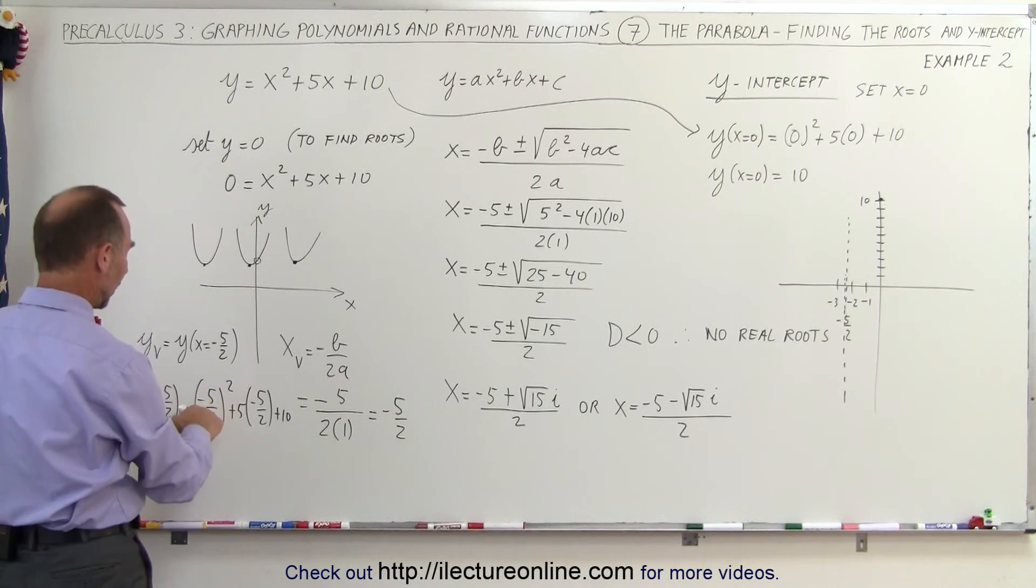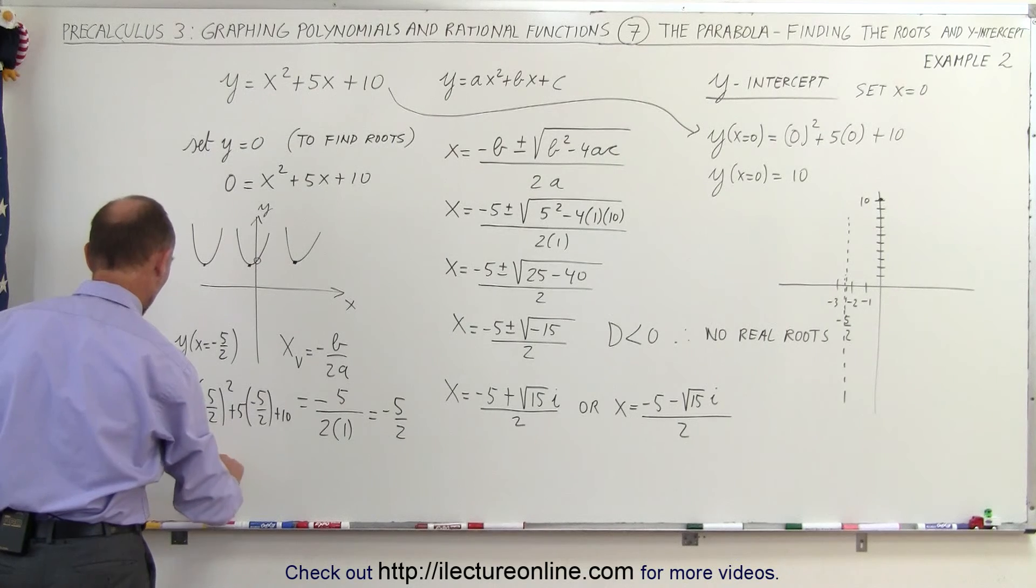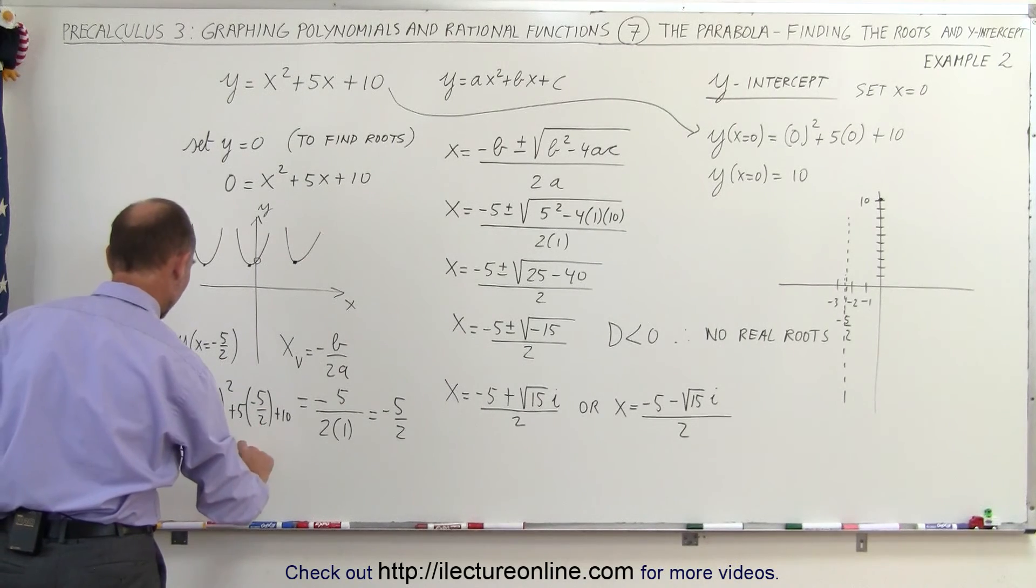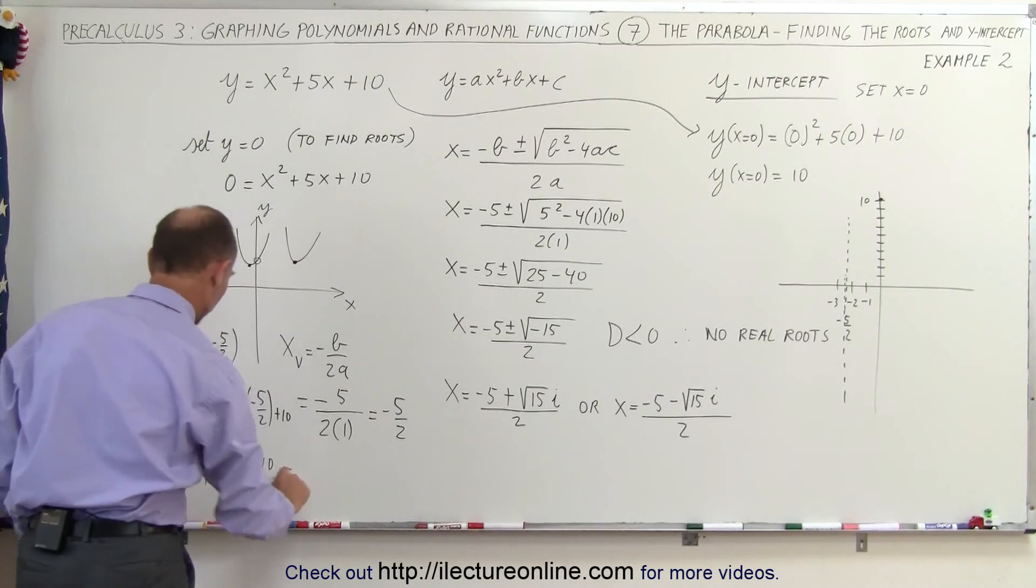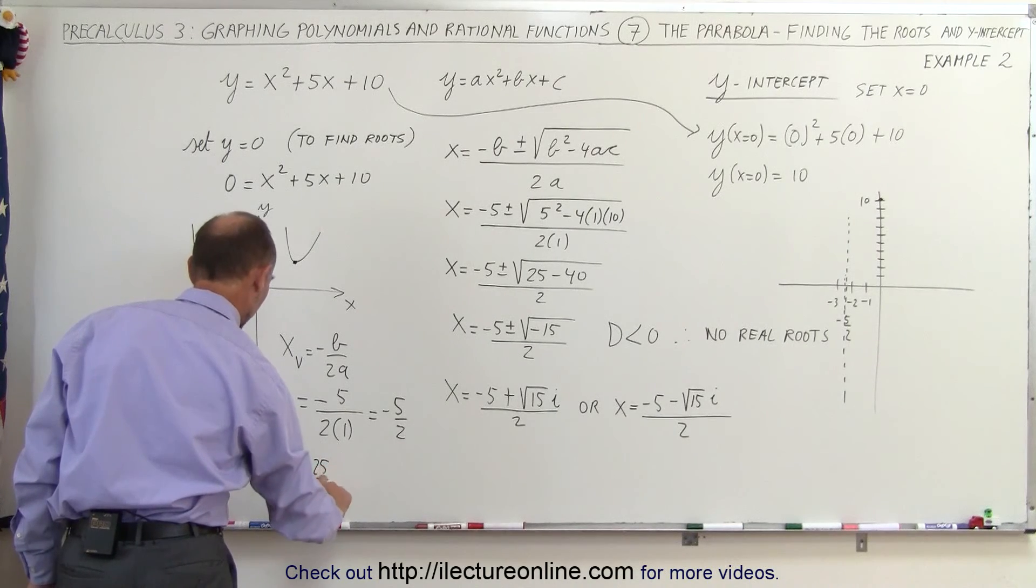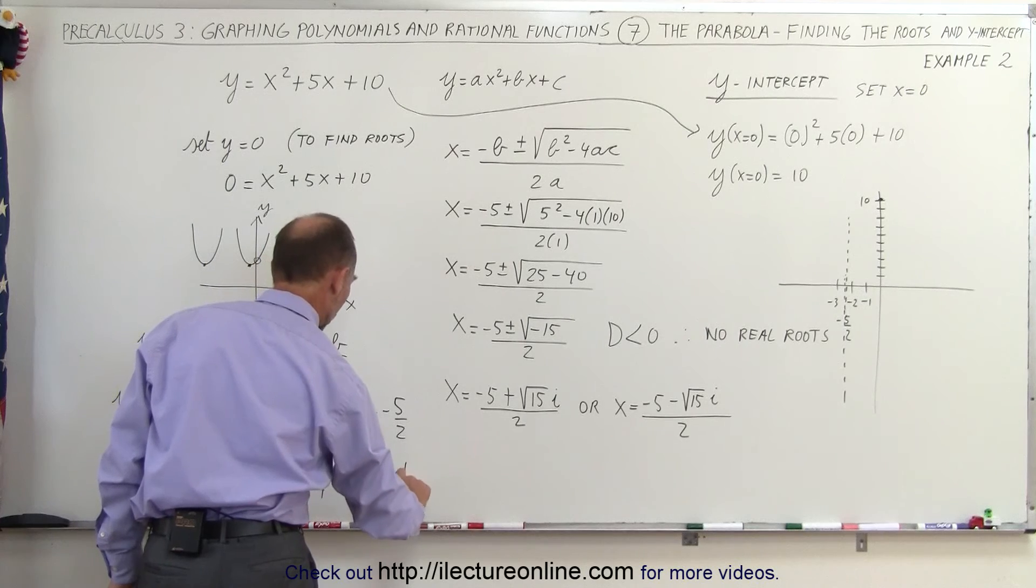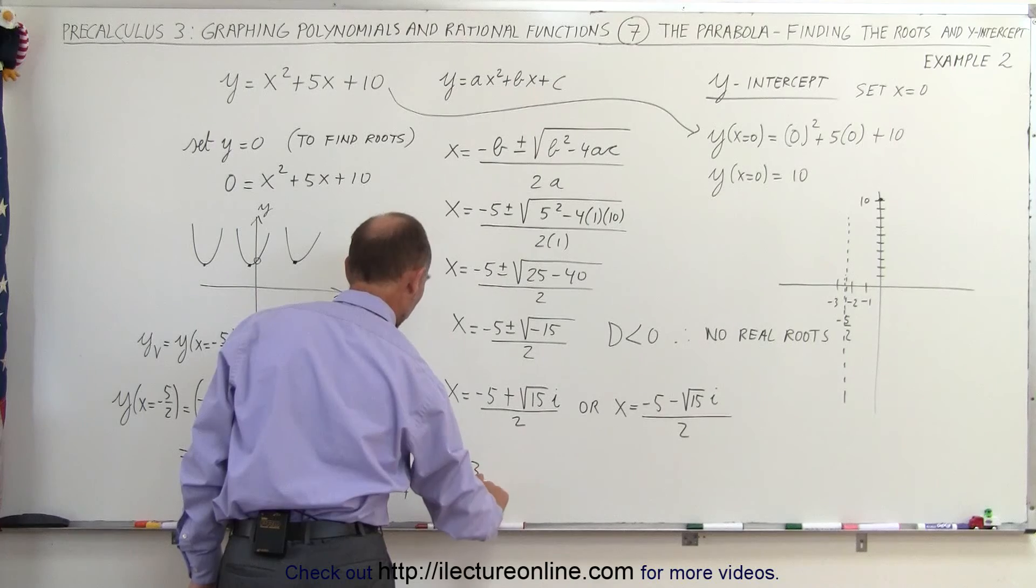So this would be equal to, since that's squared, the negative then cancels. So I have a positive 25 over 4. And this doesn't cancel, so I have minus 25 over 2 plus 10. That simplifies to minus 25 over 4 plus 10, which is minus 6 and a quarter plus 10. That means this is equal to 3 and 3 quarters.